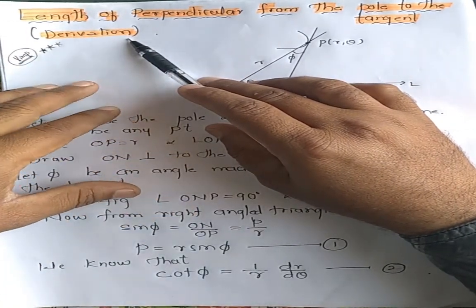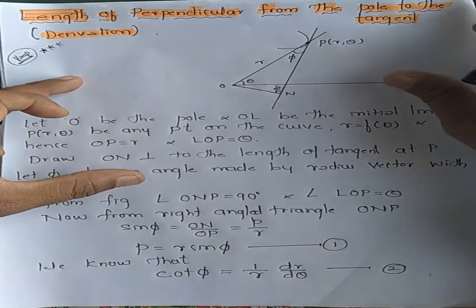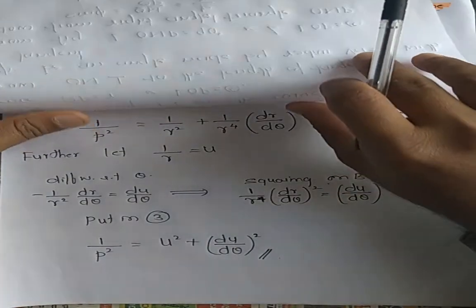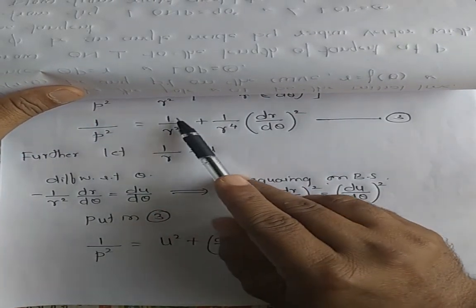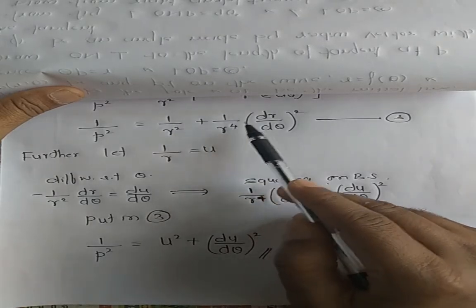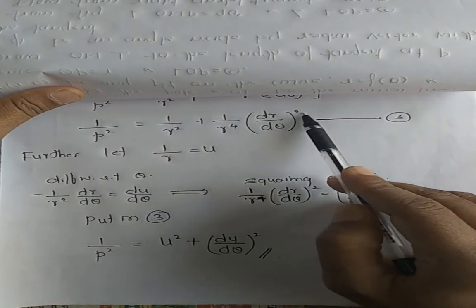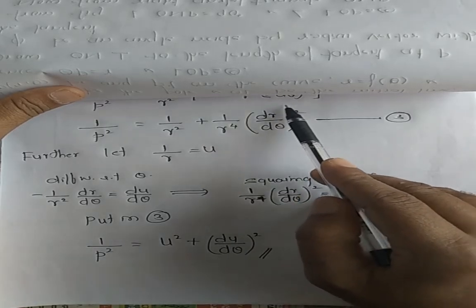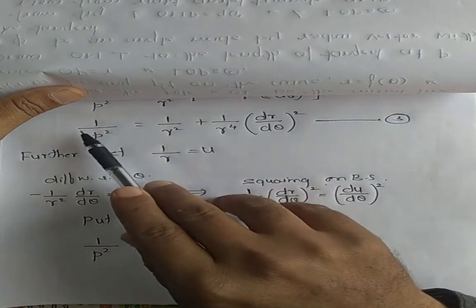In the examination, they ask you to prove this expression with usual notation: 1 divided by p² is equal to 1 divided by r² plus 1 divided by r⁴ into (dr/dθ)². This is the important derivation you need to prove.